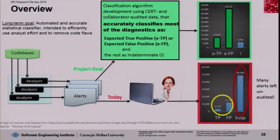Unfortunately, that means that many alerts get left unaudited because there simply isn't enough effort available. Our goal is to follow the arrows going to the top, up to the green rimmed chart. We're doing classification algorithm development using CERT and collaborator audited data that accurately classifies most alerts as expected true positive or expected false positive, with the rest being indeterminate. Our long-term goal is an automated and accurate statistical classifier intended to efficiently use analyst effort and to remove code flaws.